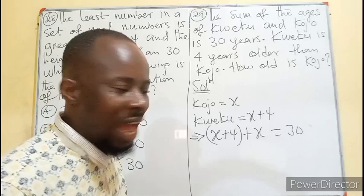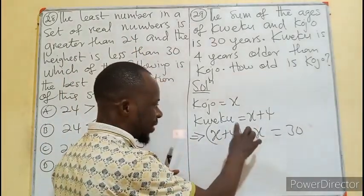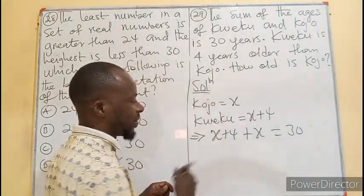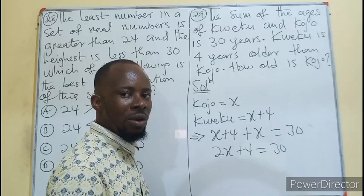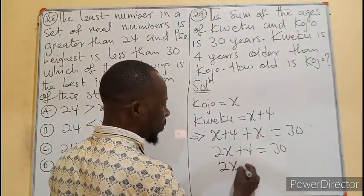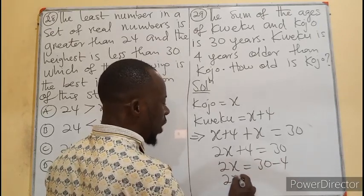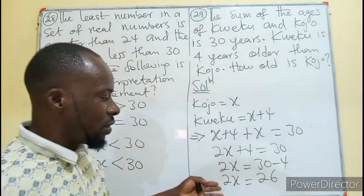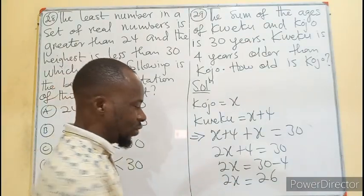This becomes a linear equation. The bracket brings no change, so x + 4 + x equals 30. There are two x's, therefore 2x + 4 = 30. We subtract 4 from both sides, so 2x = 26. For me to get 2x, one must be 13 and the other 13.